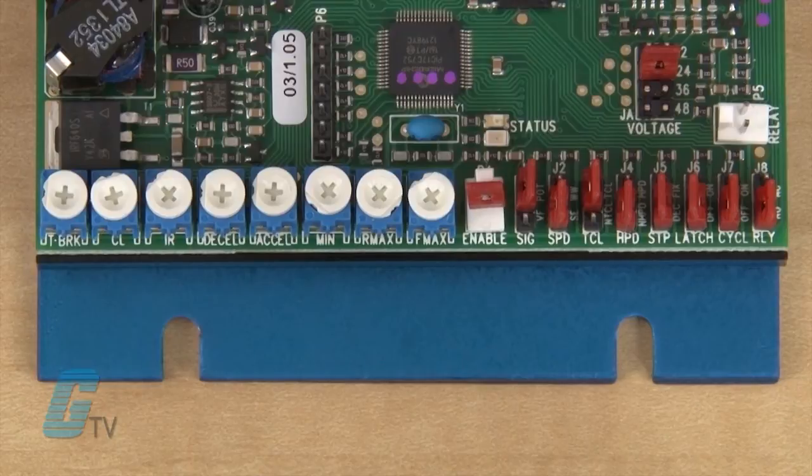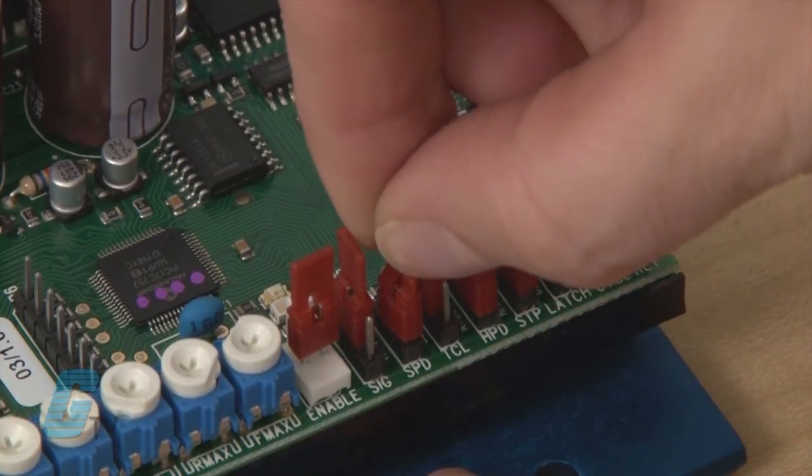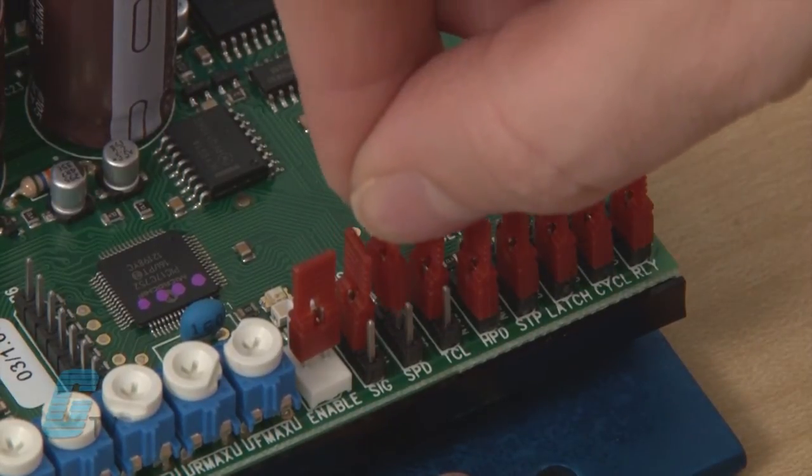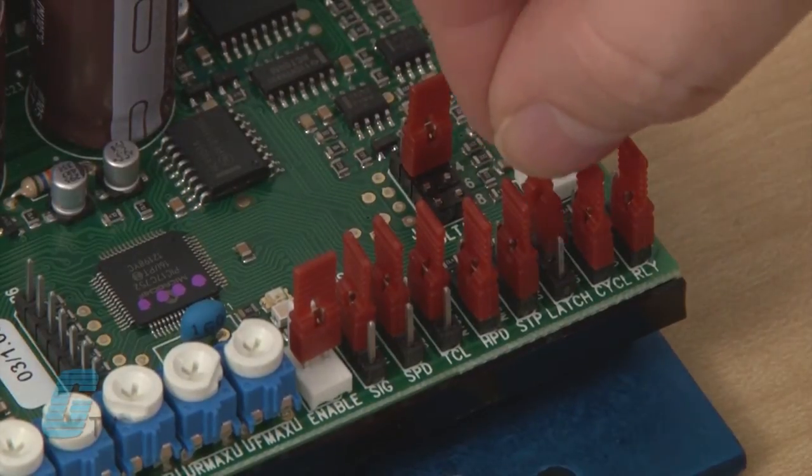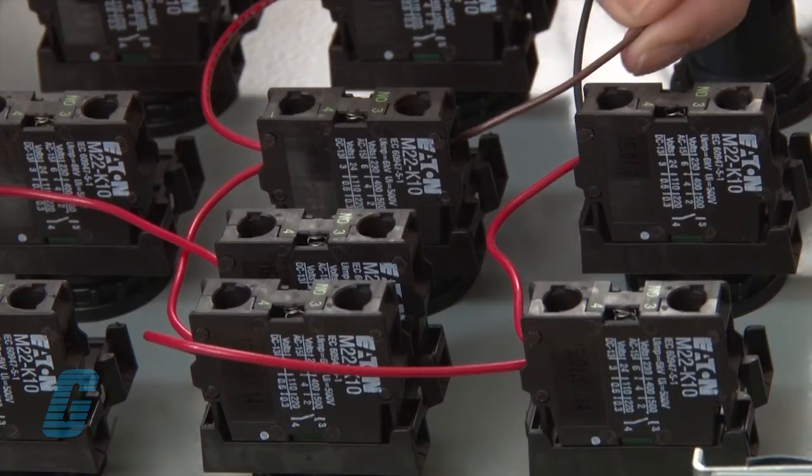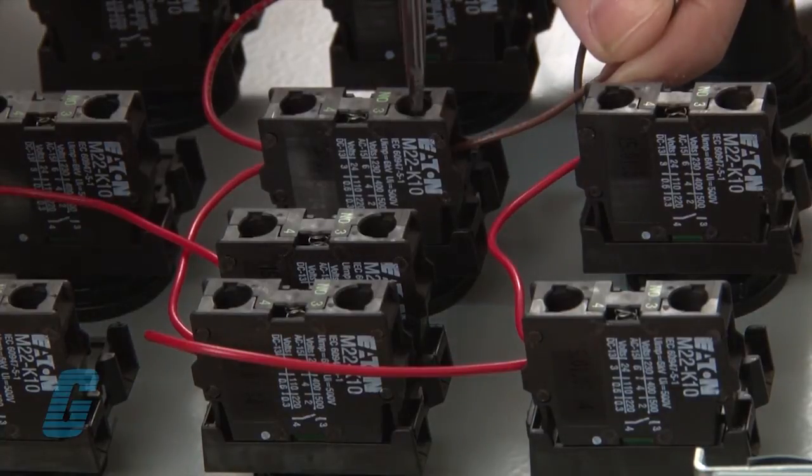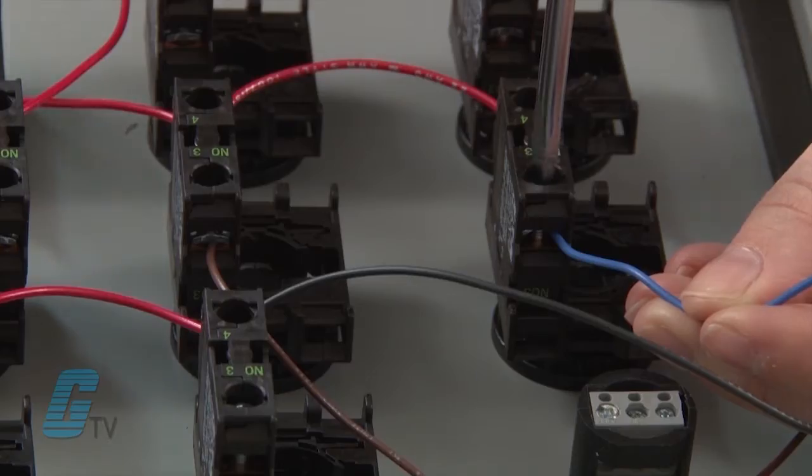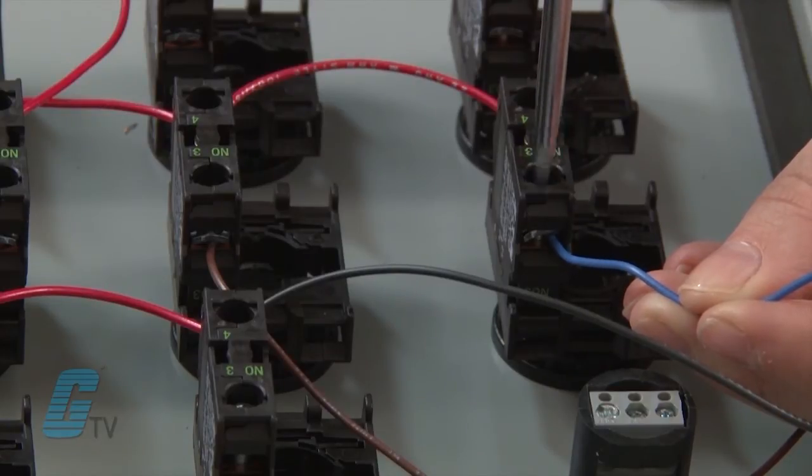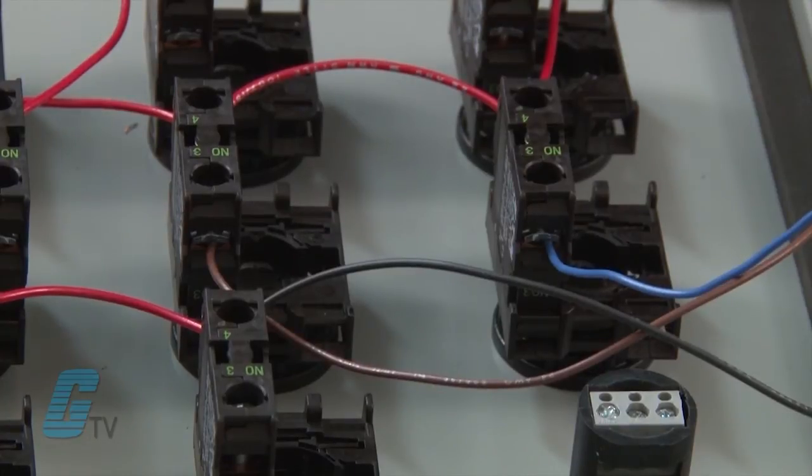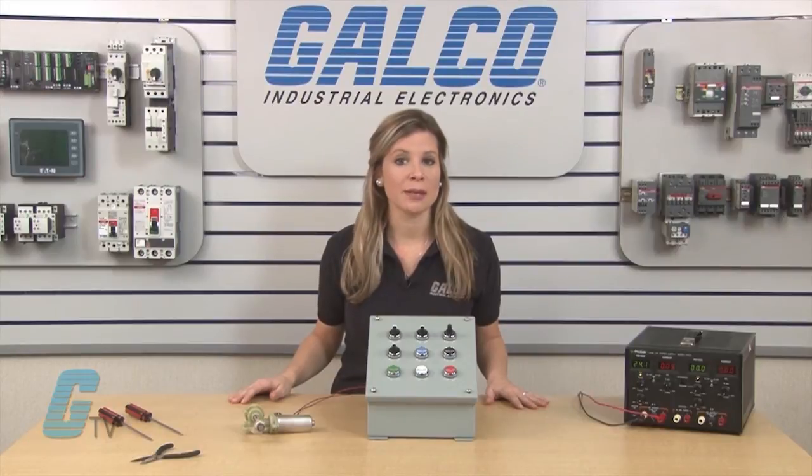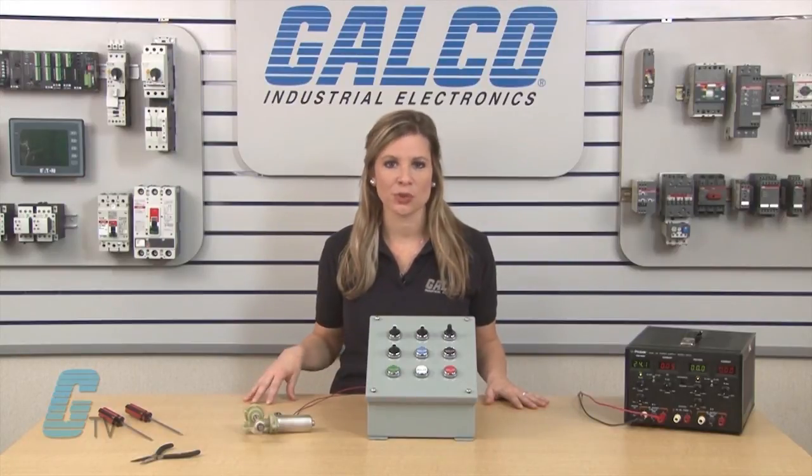For wigwag connections, the J2 jumper should be set to WW and the J6 jumpers should have latch on. Setting up for wigwag only requires two connections with the brown wire on 1 and the blue wire on 3. These two connections should be connected to a momentary switch that is also connected to the common on 5. To reset the drive in this operation, the main speed pot must be returned to the center position.